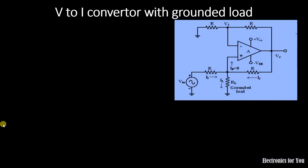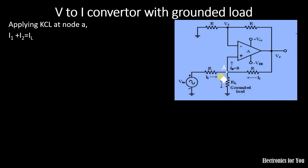The second type is V2I Converter with Grounded Load. You can see that this is our load resistor RL, the current flowing through it is IL, and it is connected to ground — that's why it is called V2I Converter with Grounded Load. Let this point be A. Applying KCL at point A: I1 and I2 are incoming currents, while IL and IB are outgoing currents. Since IB equals zero, I1 plus I2 equals IL.